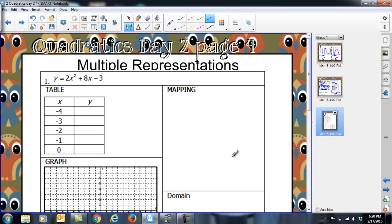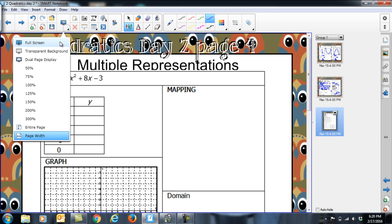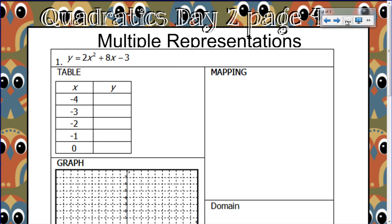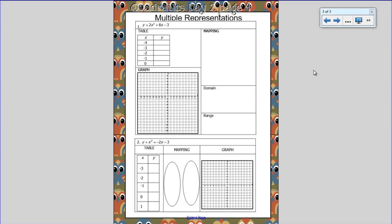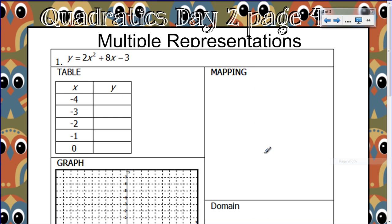Let's talk about multiple representations. We did this with linear equations. We talked about all the multiple ways we could represent a linear equation. Same thing is going to happen with quadratics. There are several ways. Here's our equation. One representation is the equation, and I can represent this equation with a table.